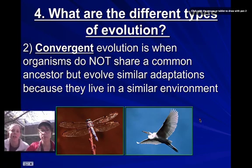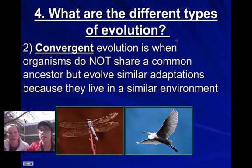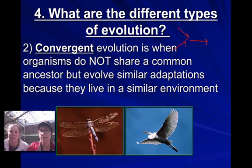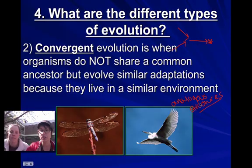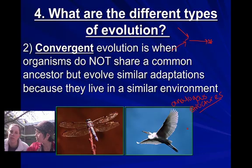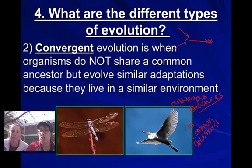The other type is called convergent evolution. To converge is the opposite of diverge — instead of starting at one central place and then separating, we start off in two separate locations and meet in one common place. In this case, we're talking about analogous structures. We have the same two examples as before: a dragonfly on the left and a bird on the right. These two things obviously do not have a common ancestor, because if we look at their bone structure, it's not similar — it's very different. But if we look at how they use their wings, we know they use them in a similar fashion. So they were forced to evolve structures that have the same function because they live in a similar environment.